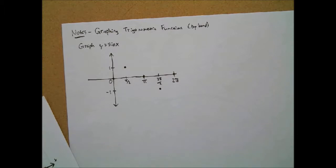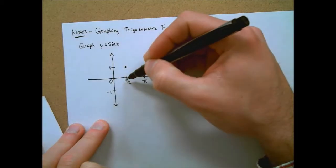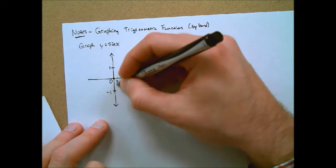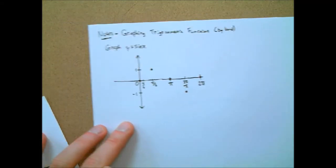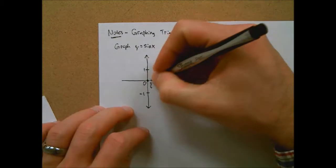If you don't believe me, consider the points between zero and pi over two. For example, pi over six: sine of pi over six is one half, so that's pretty easy to graph — we just go halfway up. And then pi over four: sine of pi over four is root two over two, which is approximately 0.707. So we're a little bit higher — not quite three-quarters, which would be 0.75.